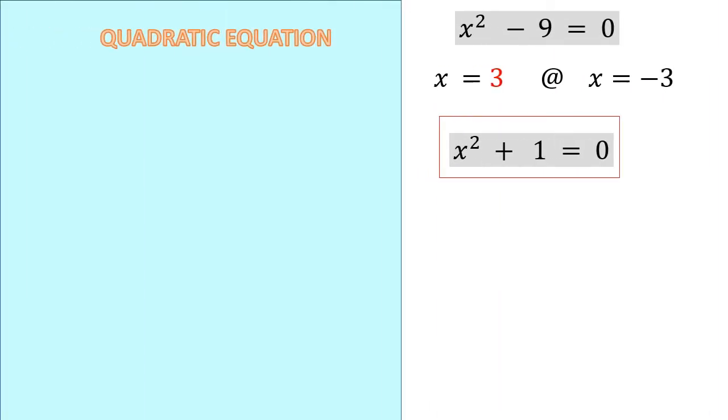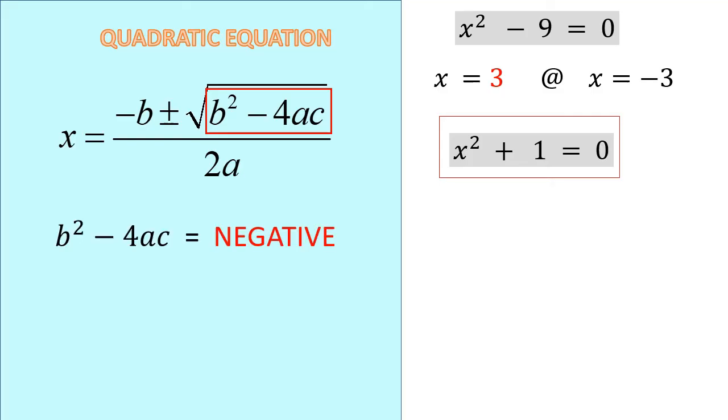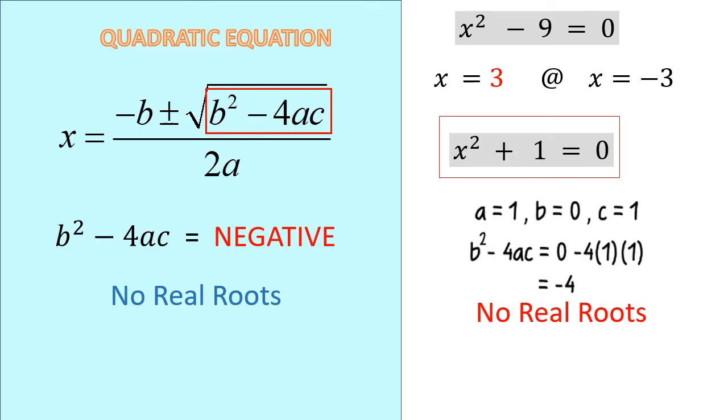Do you remember that while finding the solutions of a quadratic equation using the formula, if the discriminant b² - 4ac is negative, we say that there are no real roots of the quadratic equation. Based on what we have studied earlier, x² + 1 = 0 will not have any real roots if the value of the discriminant is negative 4. So why did we do this? And what is the problem?